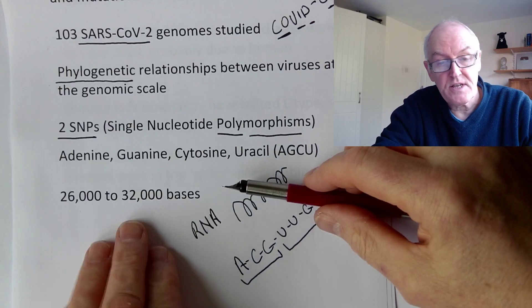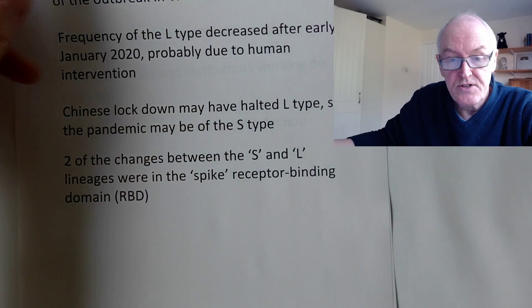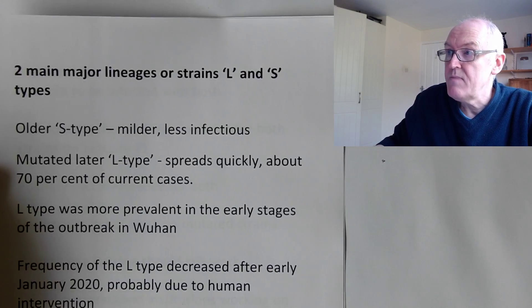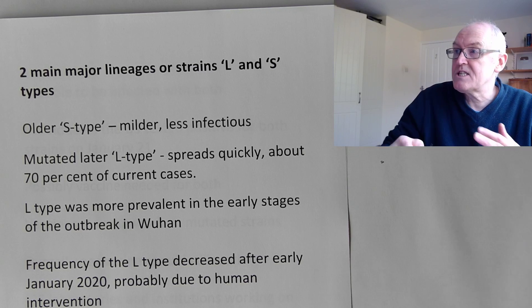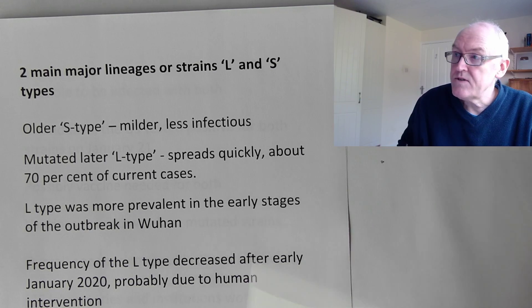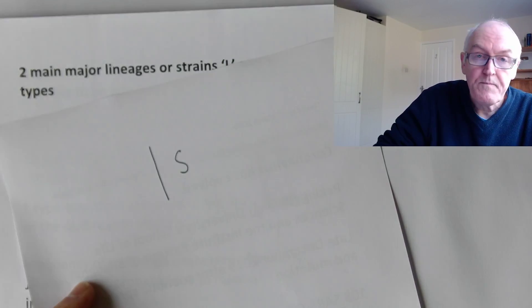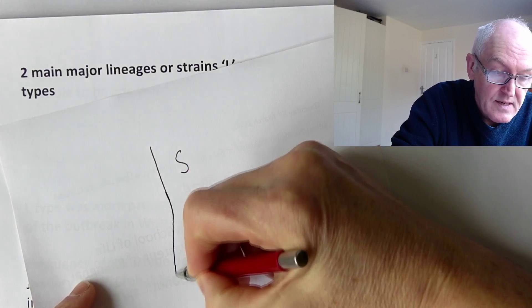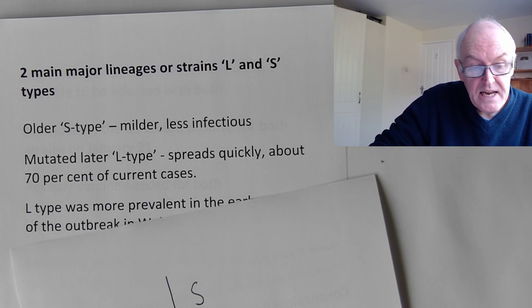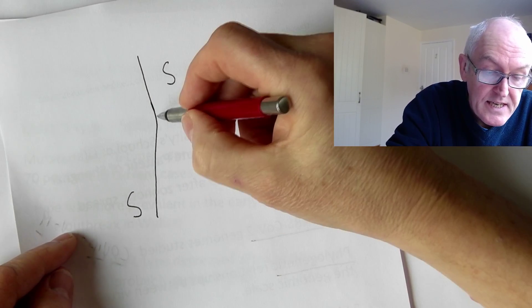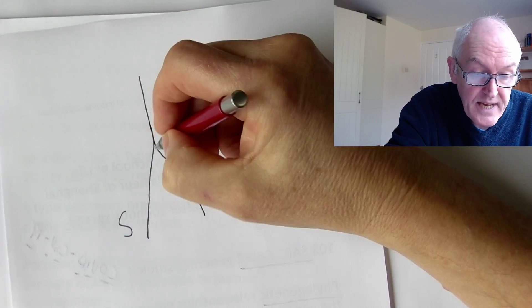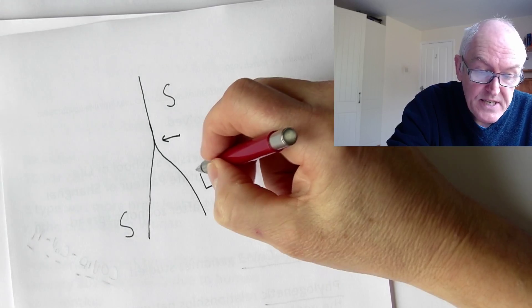There were just two changes out of these 30,000 or so bases in this mutation. That means there are now two main lineages of the virus: the L strain and the S strain. Geneticists think there was an ancestral S form that was the first form. This S form carried on reproducing and we now have lots of S forms, probably all over the world. But at the same time, one S form virus mutated into what is now called the L form.